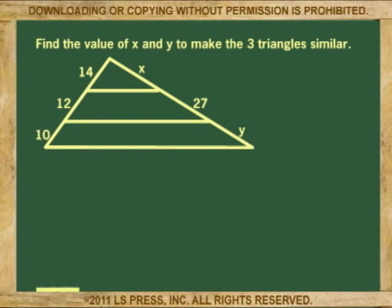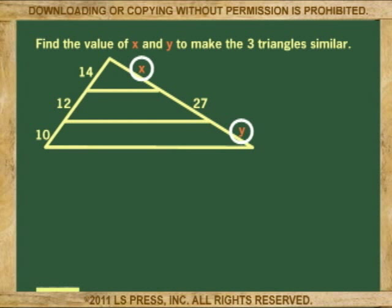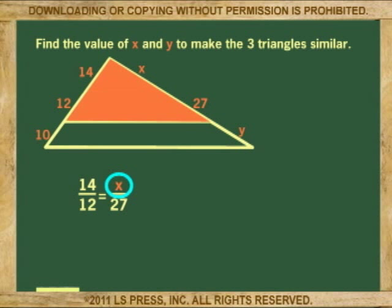In the next example, we have to find the values for x and y, considering that they form part of three triangles that are similar. By now, we know that for the triangles to be similar, the lines have to be parallel, and that parallelism comes from parts being proportional, so that 14 is to 12, as x is to 27. This will give us the value for x that would make the two top triangles similar.